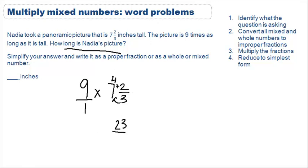We'll rewrite these fractions down here so we have more room to work with them. Step three says multiply the fractions. Remember we multiply numerators by numerators and denominators by denominators. Nine times 23 is equal to 207. Three times one is equal to three.